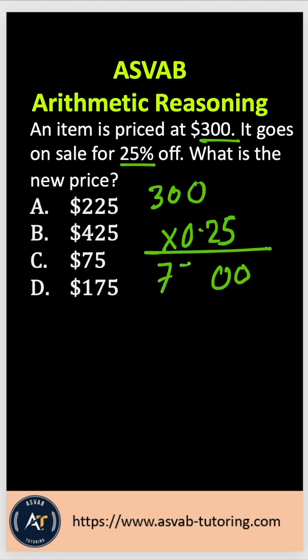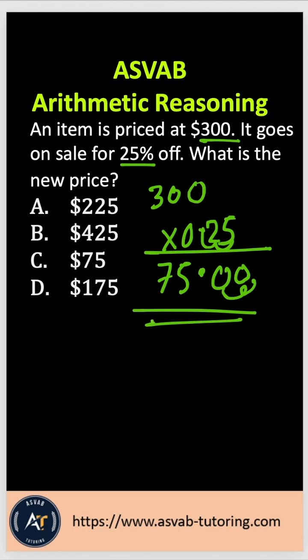That gives you 7,500. After the decimal you have two digits, so you need to move two decimal places from right to left — one, two. That means $75 is the discount.